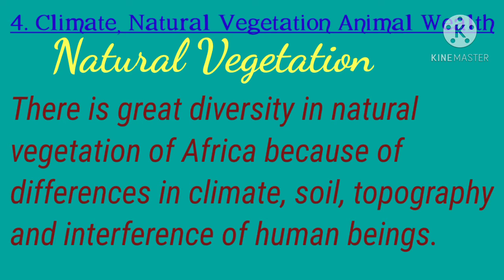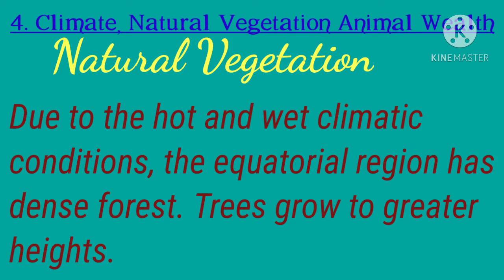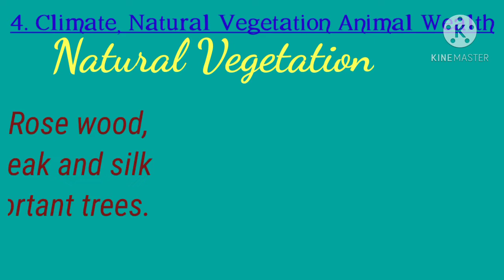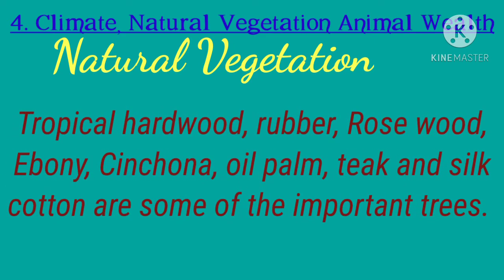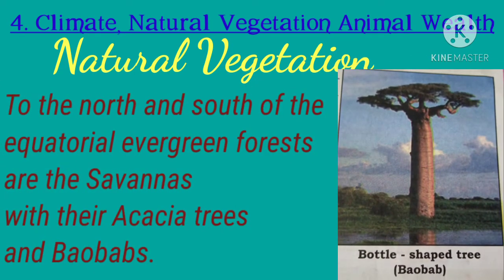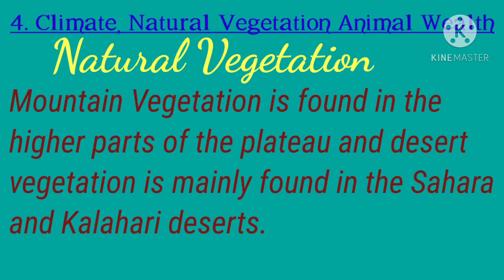There is great diversity in natural vegetation due to differences in climate, soil, topography, and human interference. Due to hot and wet conditions, the equatorial region has dense forests with trees growing to great heights. Important trees include tropical hardwood, rubber, rose, ebony, cinchona, oil palm, teak, and silk cotton. To the north and south of the equatorial evergreen forests are the savannahs with acacia trees and baobabs. Mountain vegetation is found in the higher parts of the plateau, and desert vegetation is mainly found in the Sahara and Kalahari deserts.